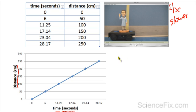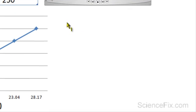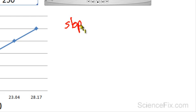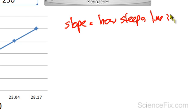And an important measurement in a line graph is slope. Slope measures how steep a line is, and it is measured in rise over run.